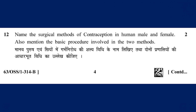Name the surgical methods of contraception in human male and female, and also mention the basic procedure involved in the two methods. The answer is vasectomy and tubectomy — these are permanent contraceptive methods. In vasectomy, the vas deferens in the male is cut and tied so sperm is not released. In tubectomy, the fallopian tubes in the female are cut.